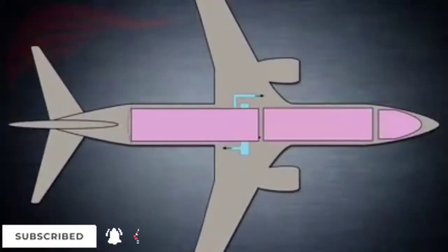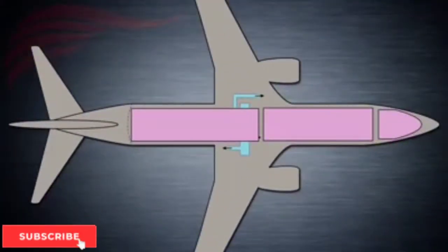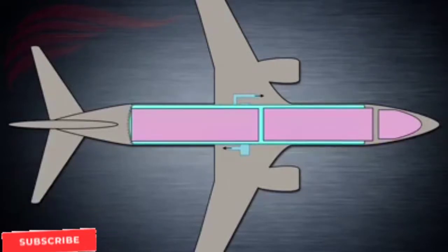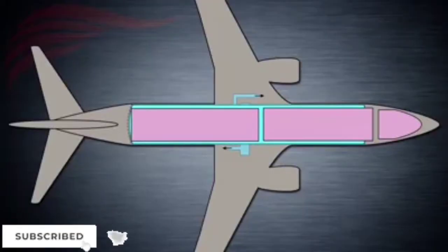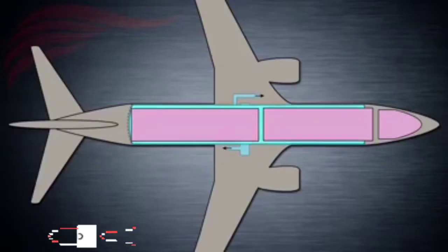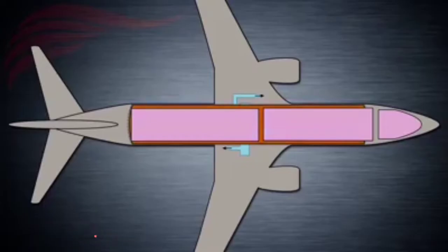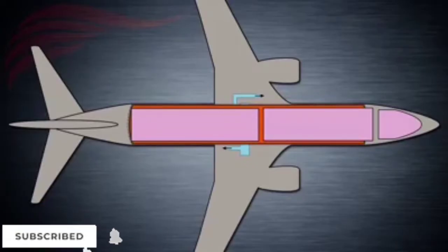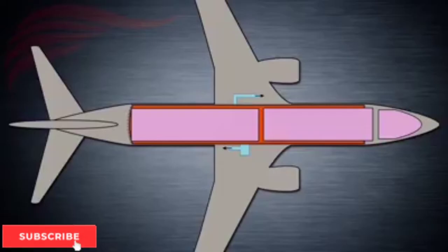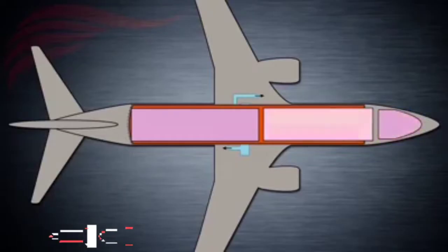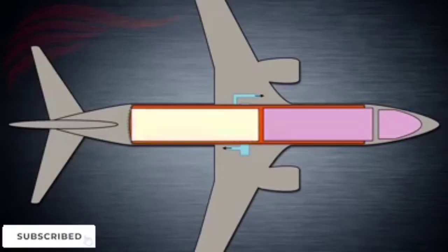Essentially, the air conditioning system performs the following functions: it produces fresh conditioned airflow for air pressurization and ventilation, controls the flight compartment and passenger cabin temperatures, recirculates around 50% of the cabin air for ventilation purposes, and removes unpleasant air from lavatories and galleys. For air conditioning purposes, the 737NG cabin is divided into three zones: the flight compartment and flight deck, forward passenger compartment, and aft passenger compartment.